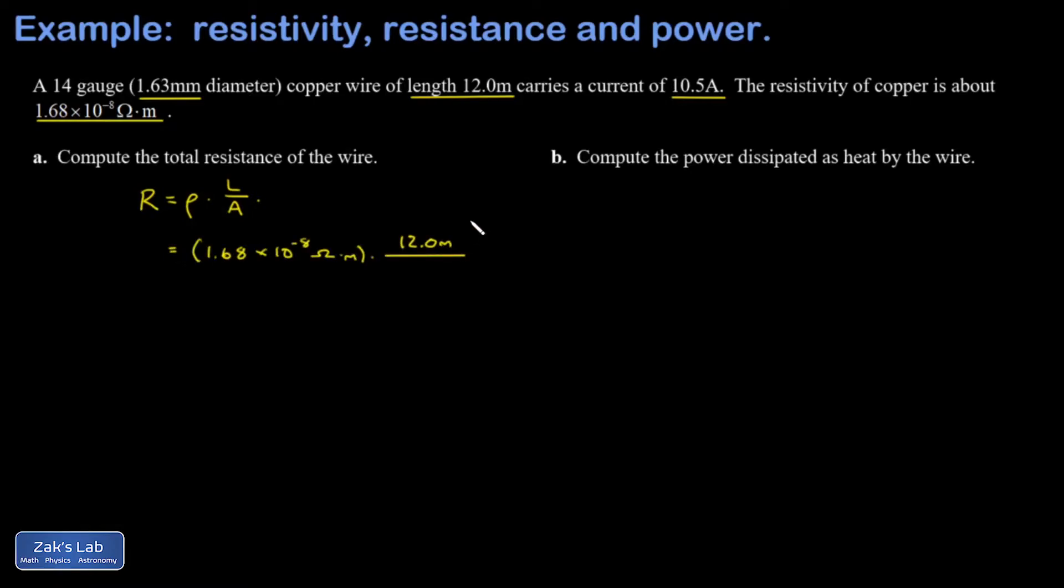All I have to do is plug into the formula. Length is no big deal, but the cross-sectional area I wanted to point out: you're probably used to writing pi r squared for the area of a circle, but it's often convenient to rework this formula in terms of diameter. So radius is diameter over two. When I square that I get a one fourth out in front, pi d squared.